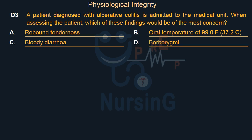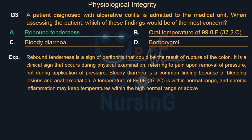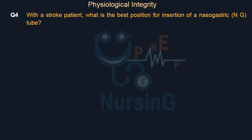The right answer is Option A: Rebound tenderness. Rebound tenderness is a sign of peritonitis that could result from rupture of the colon. It is a clinical sign occurring during physical examination, referring to pain upon removal of pressure, not during application of pressure. Bloody diarrhea is a common finding due to bleeding lesions and anal excoriation. A temperature of 99.0°F (37.2°C) is within normal range, and chronic inflammation may keep temperatures within the high normal range or above.